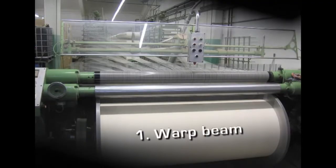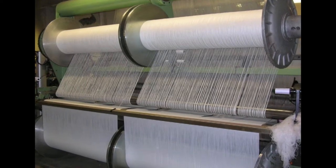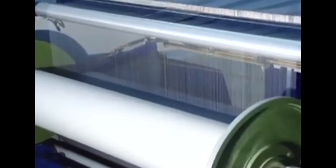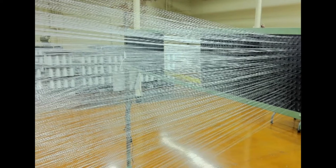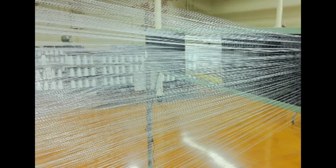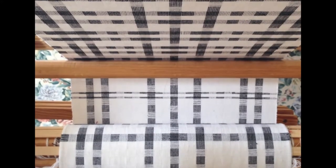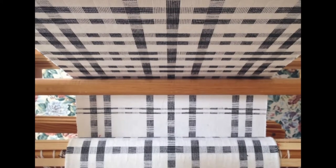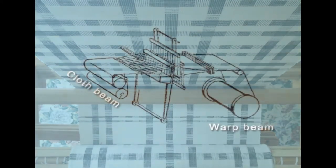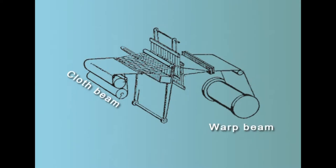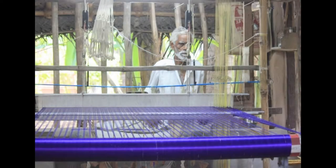The first part is the warp beam. The warp beam is a huge cylinder that contains the warp yarns. Depending upon the width of the fabric, the warp beam is made correspondingly wide. The yarns, which are sized and placed one after the other on the warp beam, are placed at the back of the loom. The warp yarns are then spread onto another beam called the cloth beam. When the cloth is being made, it winds around the cloth beam while the warp yarns are released from the warp beam. These two cylinders — one at the front and one at the back — hold the warp yarns under tension during weaving.